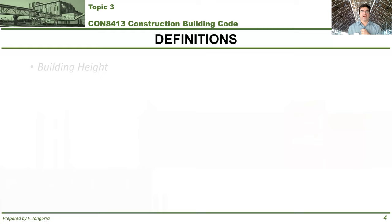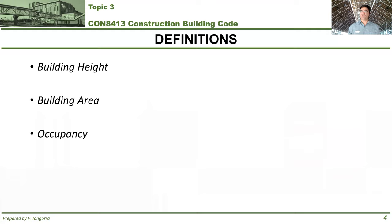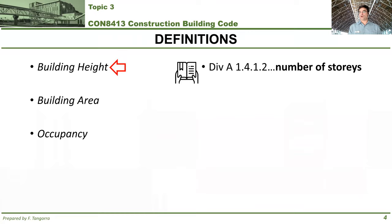But before we do that, I would like to give you the definition for three items: building height, building area, and occupancy. We use these words commonly in everyday speech, but the building code uses them in a very specific way. So let's start with building height. How does the building code define building height? As for anything else the building code defines, you'll find this under Division A, specifically under Article 1.4.1.2.